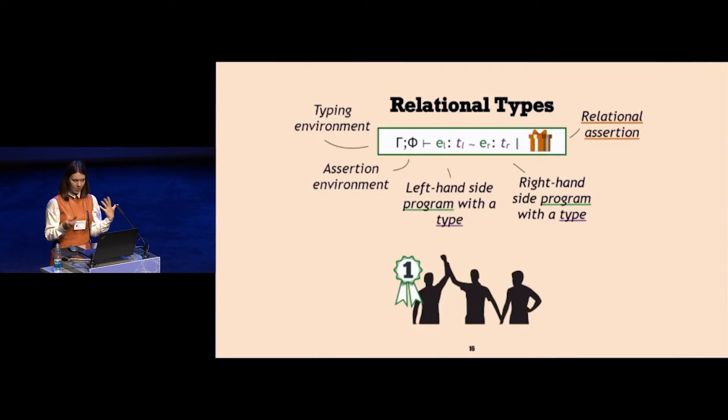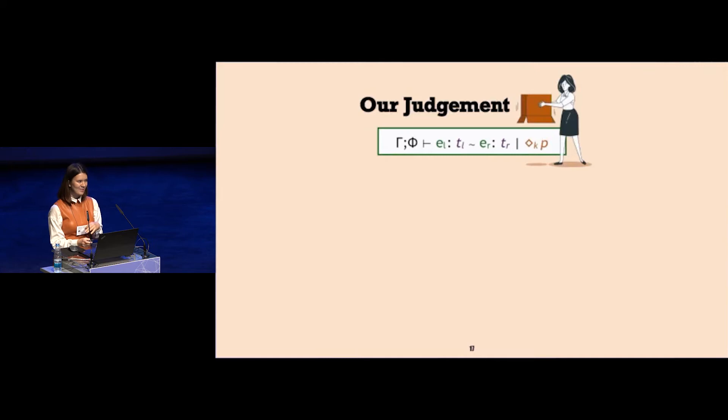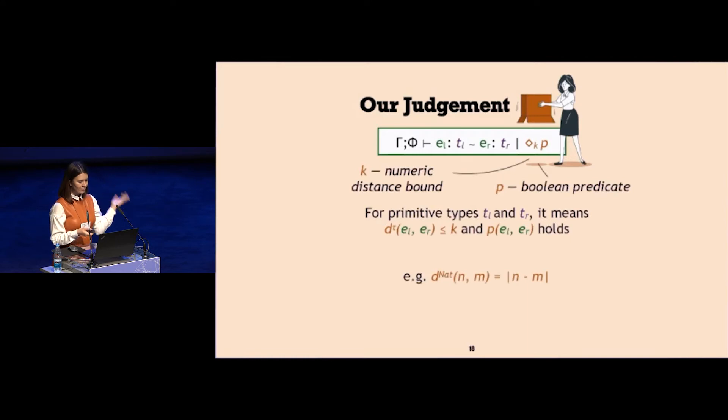The other common way to define assertion is a numeric assertion which puts the numeric measure on the extent of difference between two expressions, left and right. In my system, I combine these two common approaches with a single connective which consists of a real value k and boolean p. I define this connective inductively on types of expressions.